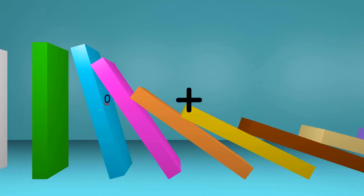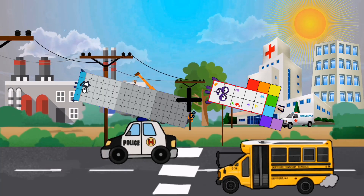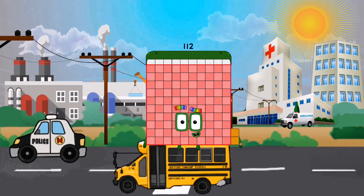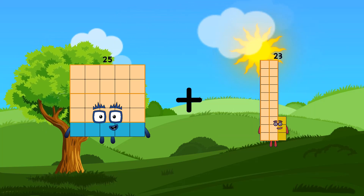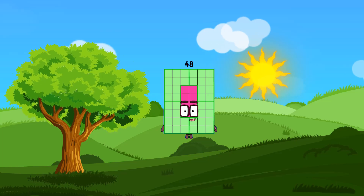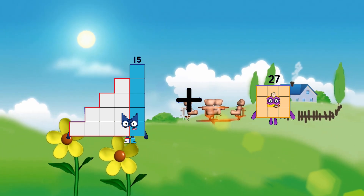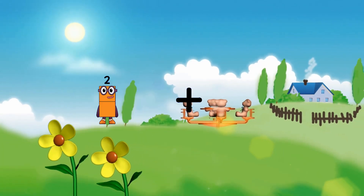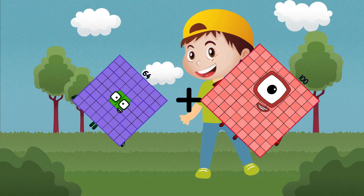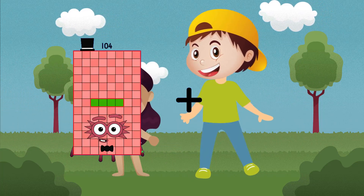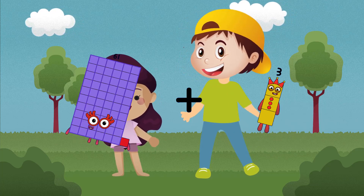95 plus 17 equals 112. 25 plus 23 equals 48. 15 plus 27 equals 42. 64 plus 100 equals 164. 61 plus 3 equals 64.